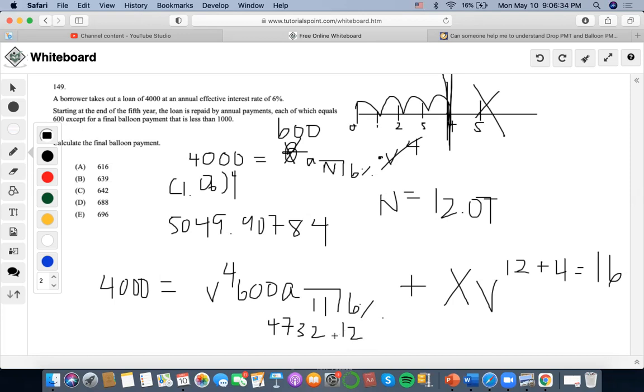Okay, so it's gonna be 3748 minus 4000, this is negative 251.71.